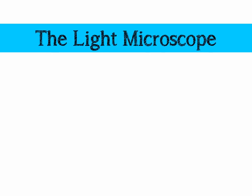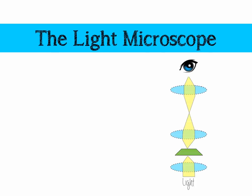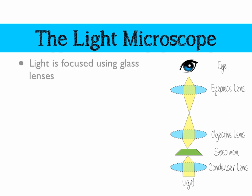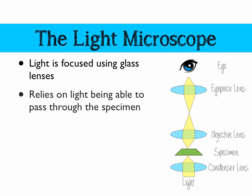Let's look at our first microscope, the light microscope. Light is sent up from the bottom through a condenser lens, through a specimen, through an objective lens, and through an eyepiece lens into your eye. Light is focused using glass lenses, and it relies on light being able to pass through the specimen. So that specimen has got to be really, really thin and transparent.